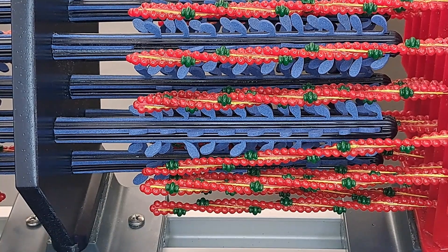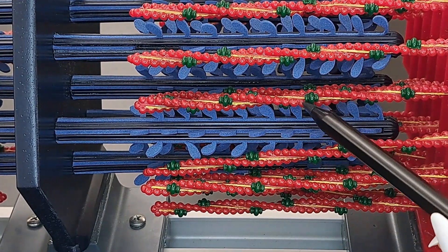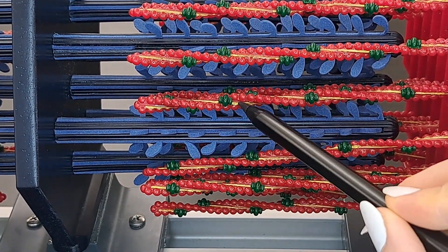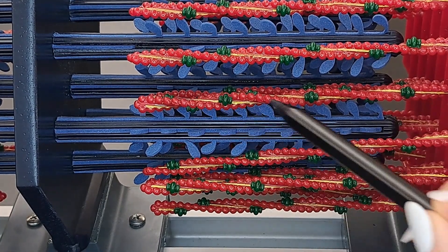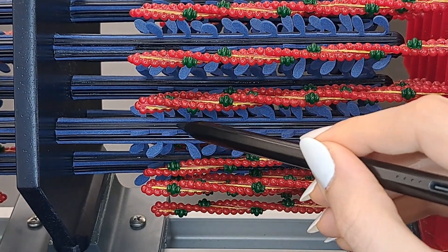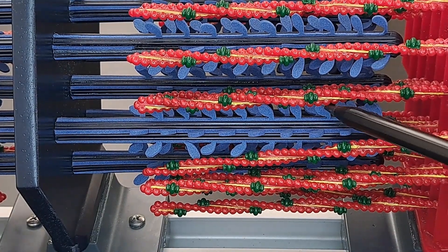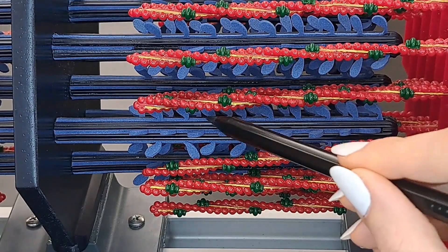The thin myofilaments consist of actin in red, troponin in green, and tropomyosin in yellow. Whereas the thick filaments in blue consist of myosin. We can see the myosin heads right here.